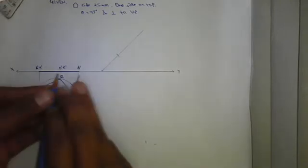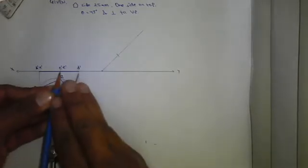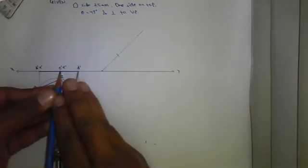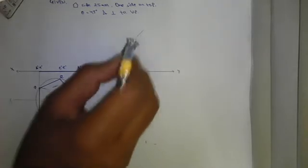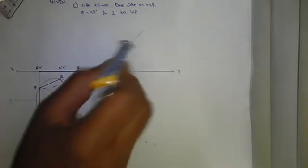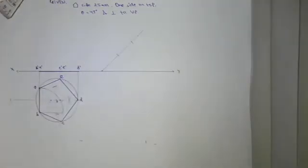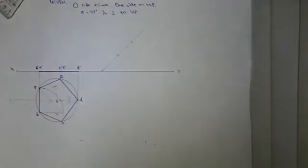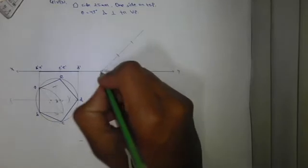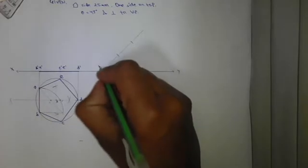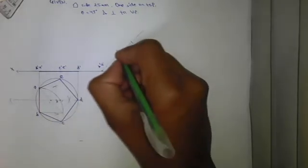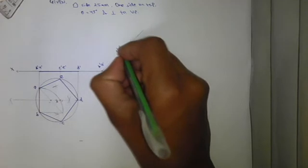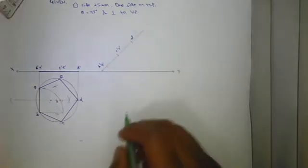Now measure this distance and mark it. Name the points and darken them: this is B dash, A dash, this is C dash, E dash, and this is D dash. Darken this line.